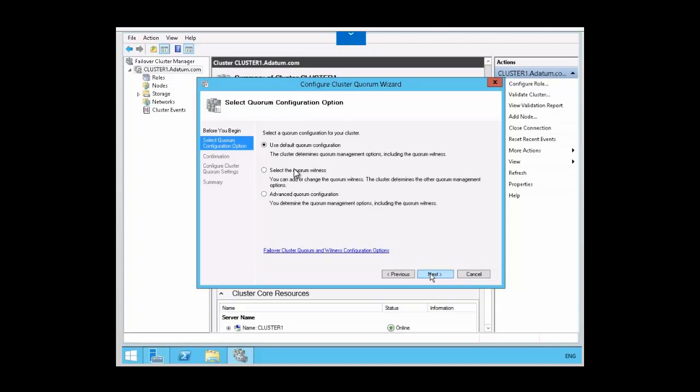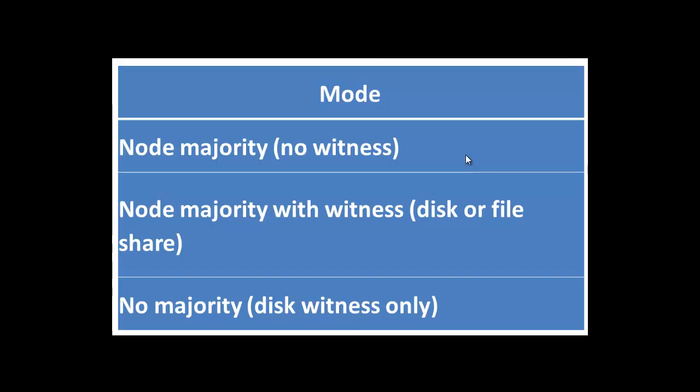Depending on the quorum configuration option that you choose and your specific settings, the cluster will be configured in one of the following quorum modes. The first mode is node majority with no witness. In this mode, only nodes have votes — only the server that has the application has a vote. There is no quorum witness configured for this mode. The cluster quorum is the majority of voting nodes in the active cluster membership.